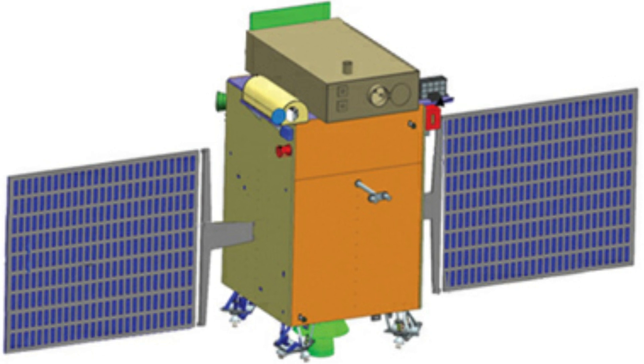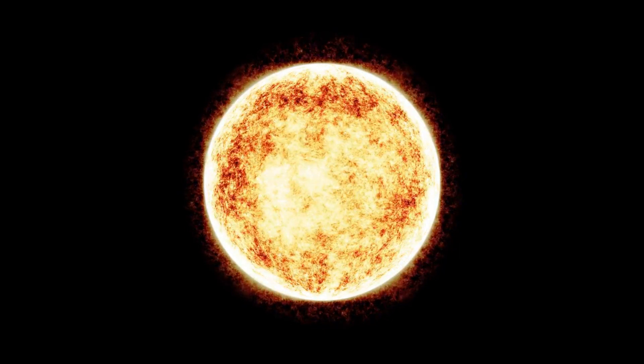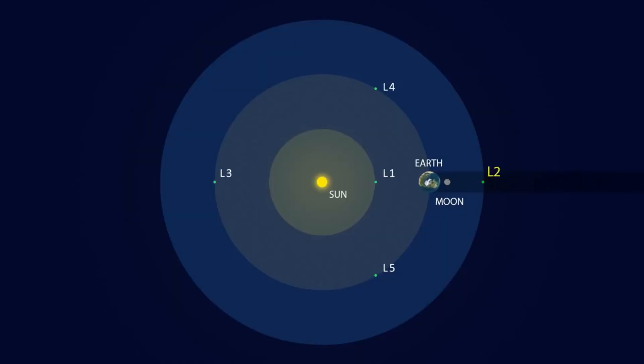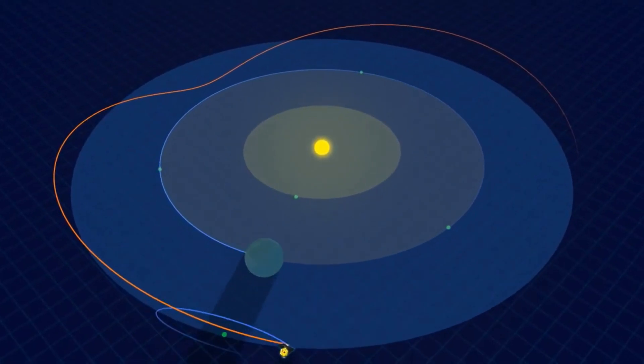But why was it named the Aditya L1 mission? The Sun is known by various names, including Aditya. The term L1 refers to the Lagrangian Point 1, a location in space where the gravitational forces of the Earth and the Sun balance each other and become zero.